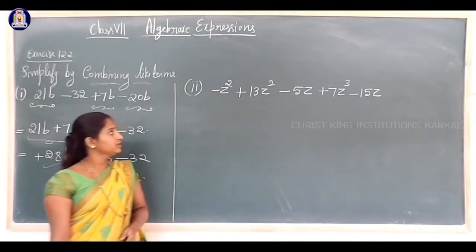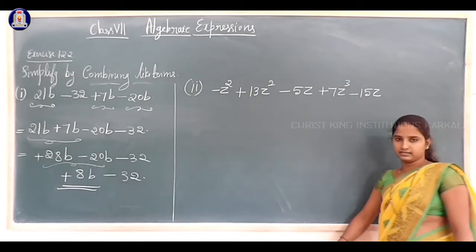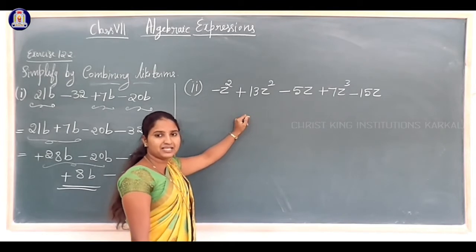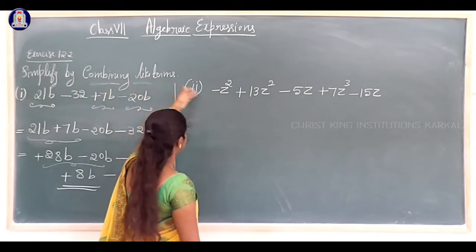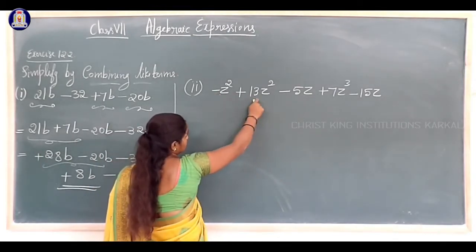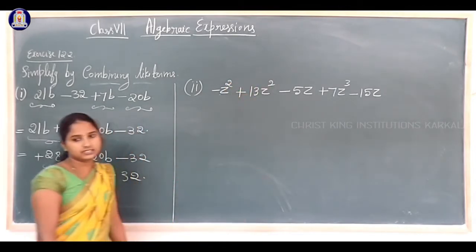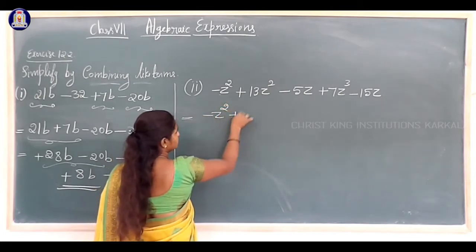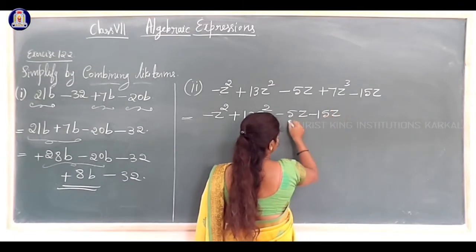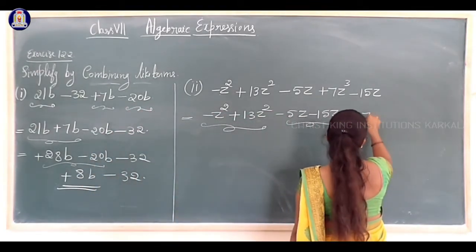Second expression: minus z squared plus 13z squared minus 5z plus 7z cubed minus 15z. Observe: z squared terms are minus z squared and plus 13z squared — like terms. And z terms are minus 5z and minus 15z — like terms. The term 7z cubed has no matching term. Combine like terms: minus z squared with plus 13z squared, minus 5z with minus 15z, and 7z cubed stands alone.